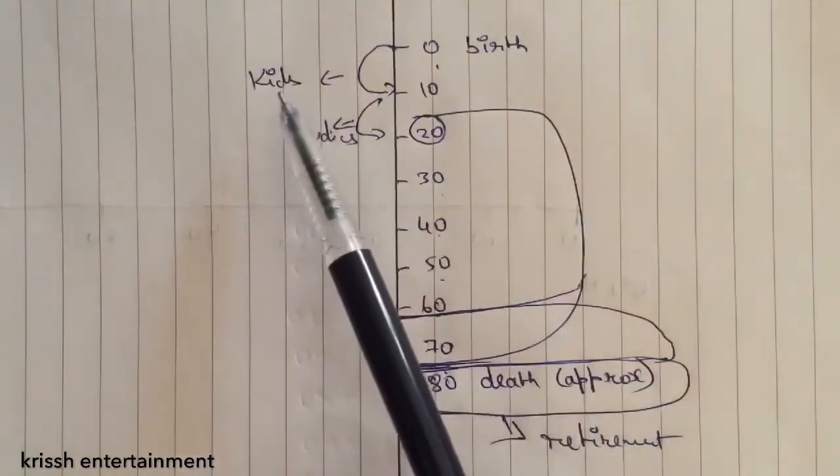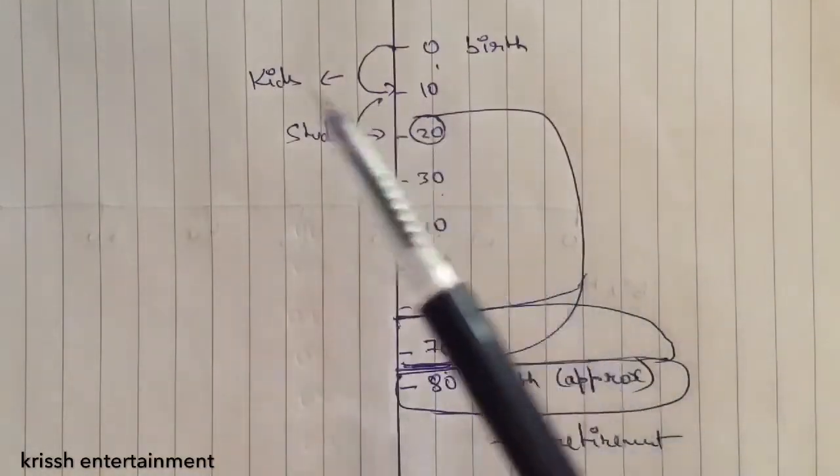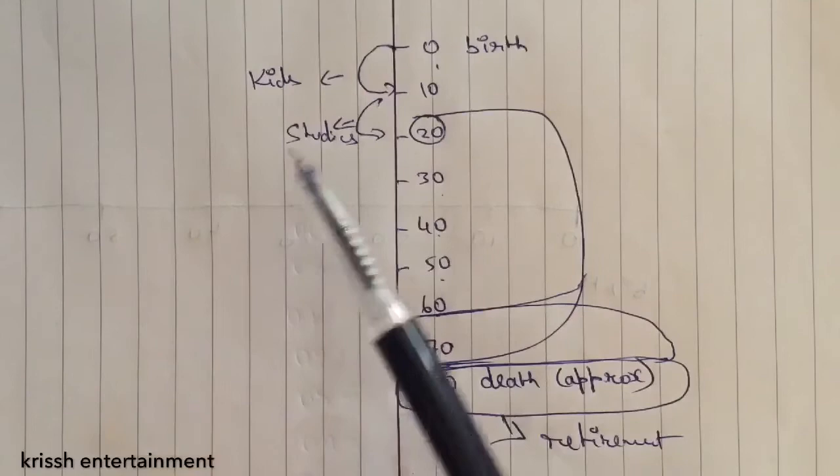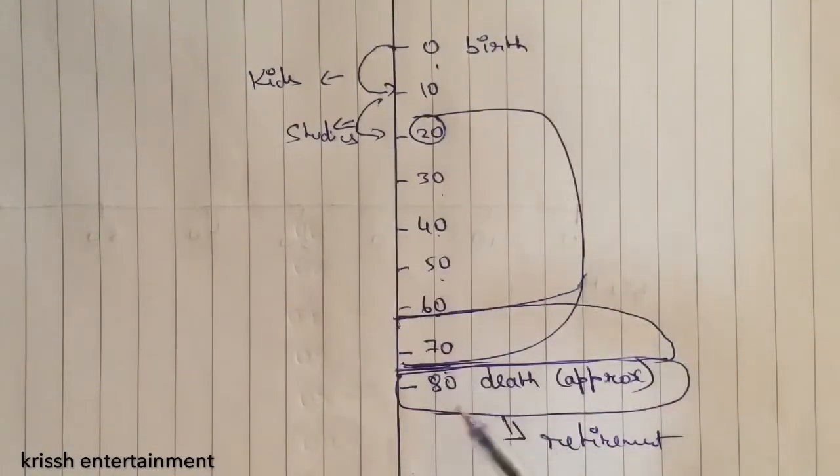0 to 10 you were kids, 10 to 20 you started to study, and let's say that 70 to 80 is your retirement.